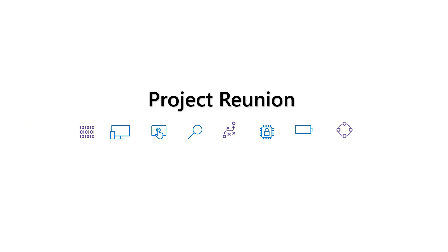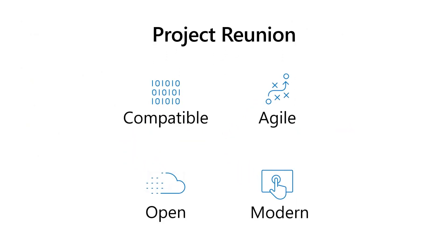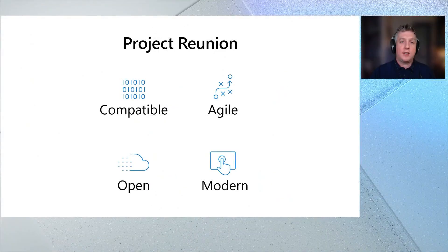Project Reunion isn't a new platform. It's really our long-term effort to unify access to the desktop and UWP platforms that apps are already using today and then continue to incrementally evolve the Windows API going forward. It's really an expansion on our efforts over the last couple of years to break down the barriers between UWP and Win32 and add new capabilities to the platform. As we looked at the best way to approach that, the principles that rose to the top — based on developer feedback — are that we need a platform that's compatible, agile, open, and modern.